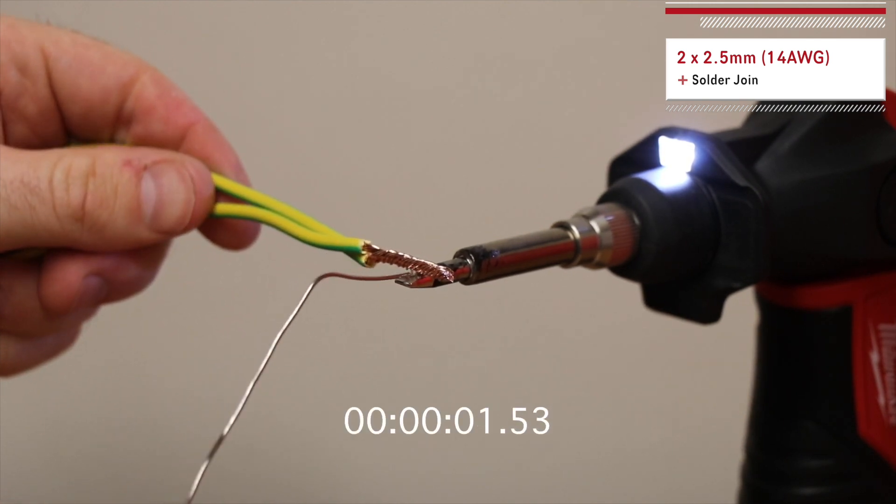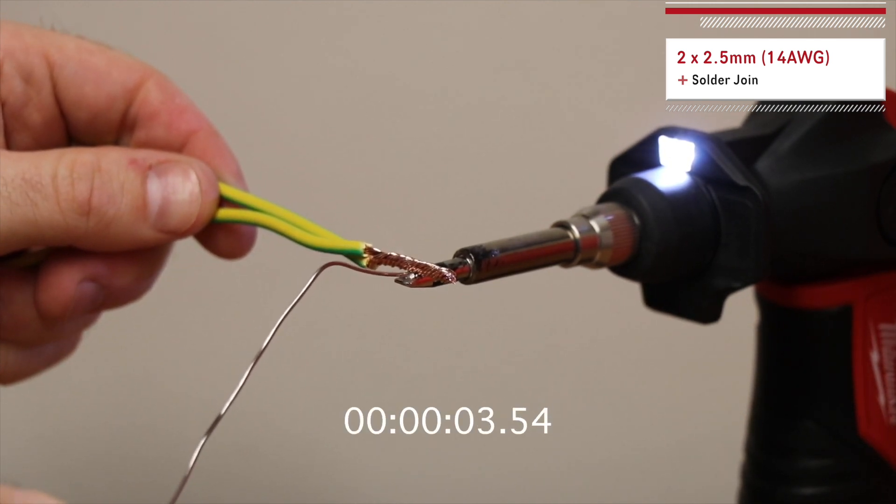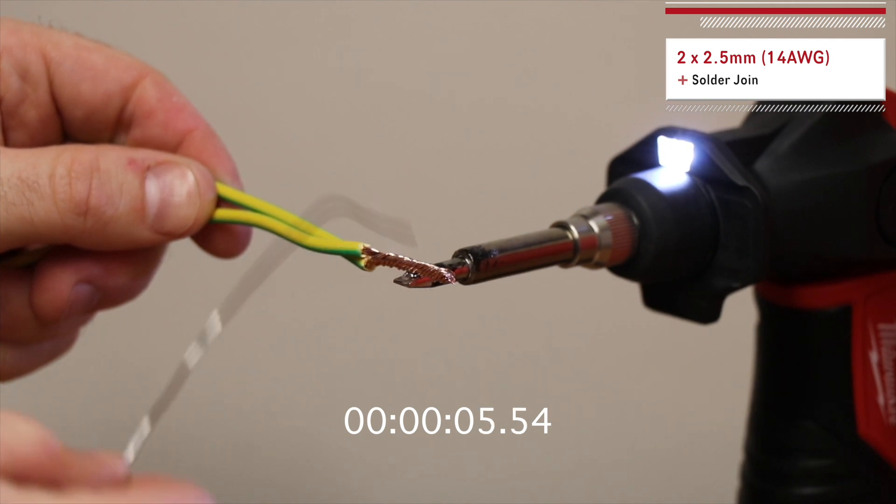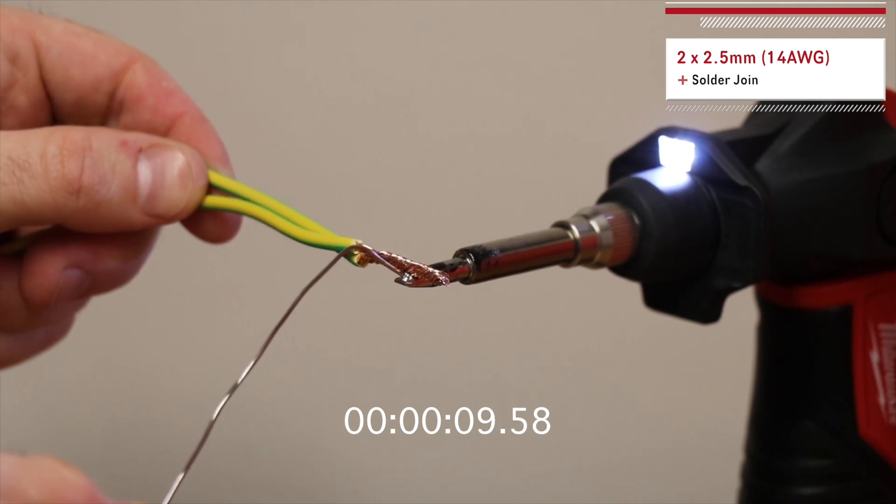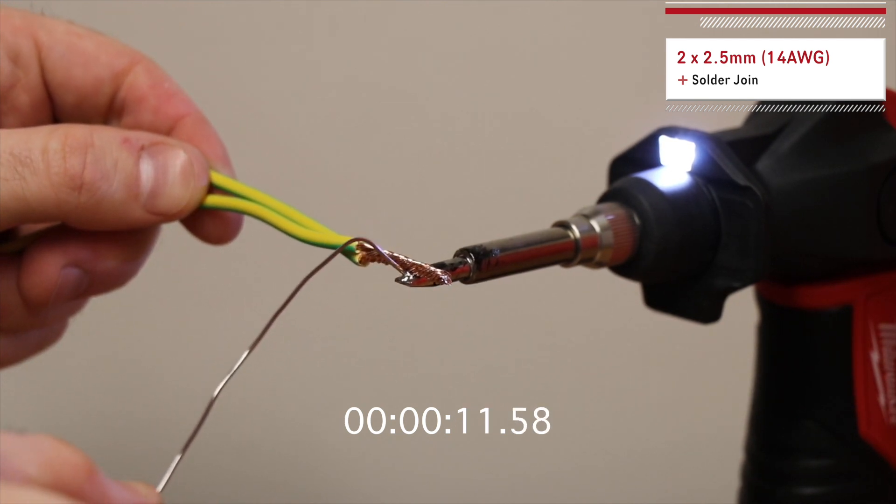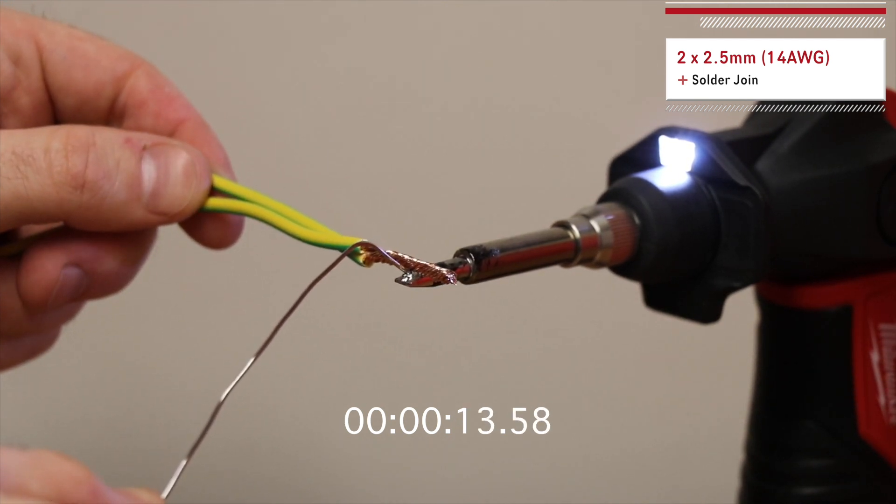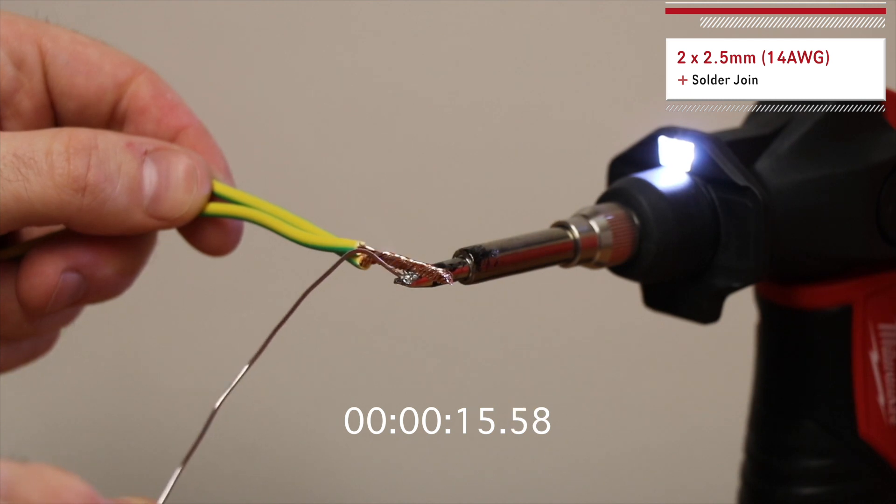Now I'm going to be soldering two sample pieces. One is joining a piece of 2.5mm or 14 AWG copper wire and the other is joining a piece of 6mm or 10 AWG copper wire. I'm going to start with the smaller piece and I'll speed ramp the video with a timer on the screen to make it a little less boring for you guys at home.